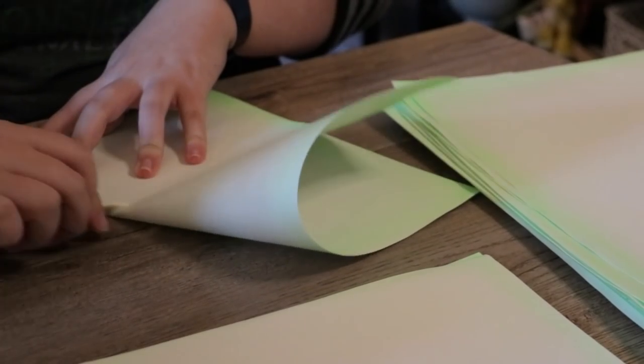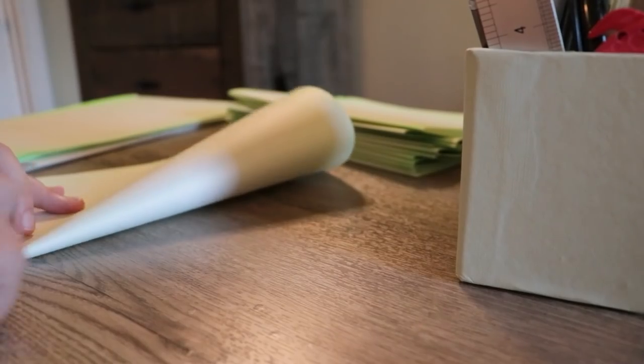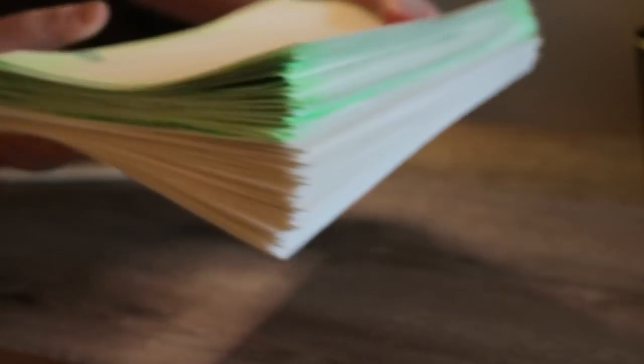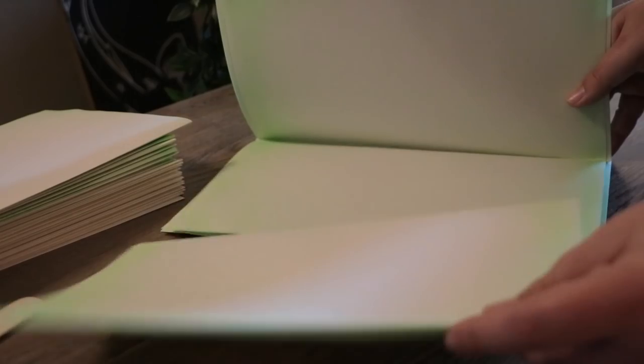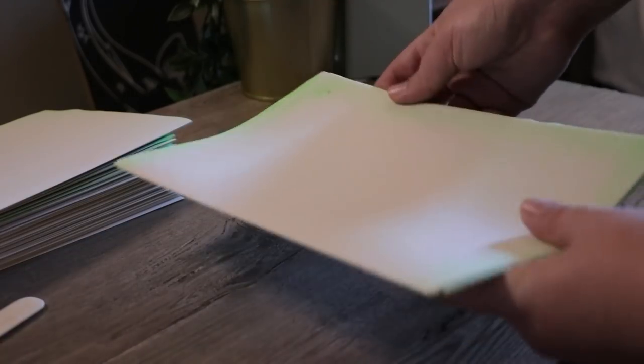So next is prepping the pages for sewing. First step to that is folding all the pages in half. Once they are all folded, I can start forming my signatures. If you're wondering, in bookbinding, a signature is just a stack of pages together. I had 50 sheets of paper, so I divided them into five to make 10 signatures.